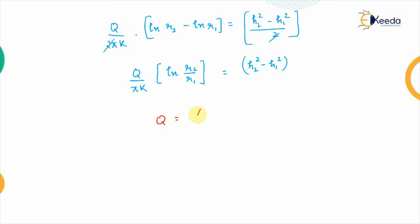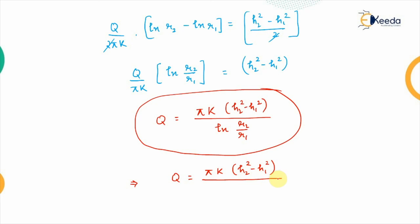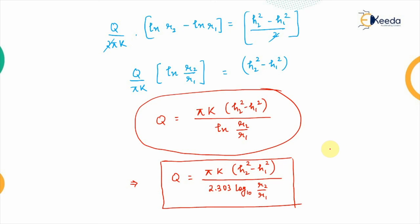The discharge relation becomes: Q = πk(h2² − h1²) / ln(r2/r1). This is the equilibrium equation for the unconfined aquifer. It may also be written converting the natural log to log base 10 as: Q = πk(h2² − h1²) / [2.303 · log₁₀(r2/r1)]. This is Thiem's equation for the unconfined aquifer, also known as the equilibrium equation. In the next video we will derive the similar formulation for the confined aquifer.